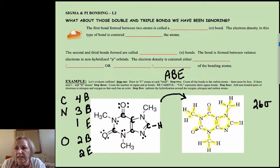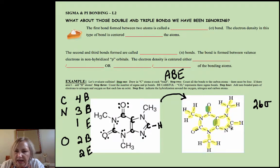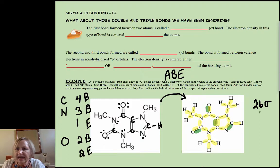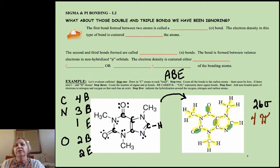Now let's look at the pi bonds — that would be the second bond formed in each double bond. So one of these two bonds is a pi, one of those is a pi, one of those is a pi, and one of those is a pi. So that's telling me I have four pi bonds.